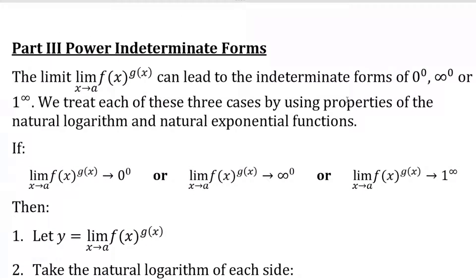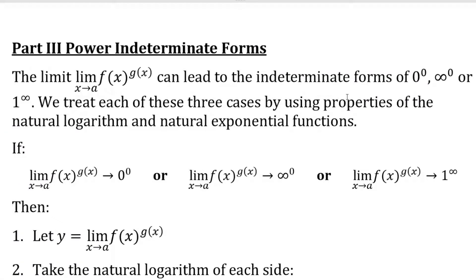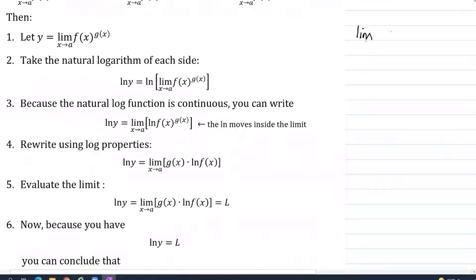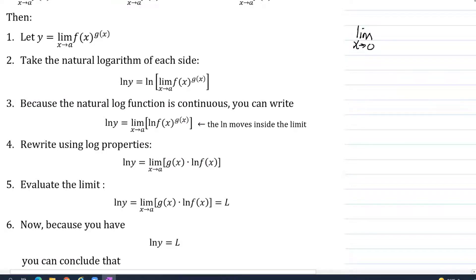So for power indeterminate forms, there's basically a series of steps that we're going to apply every single time. The limit as x approaches zero from the right of x to the x power. What indeterminate form would we have if we tried to plug in at this moment? This is going to zero and this is going to zero. So we have a zero to the zero power indeterminate form.